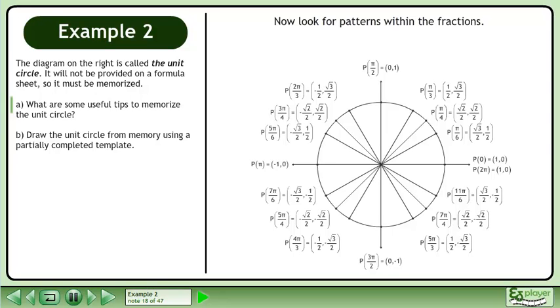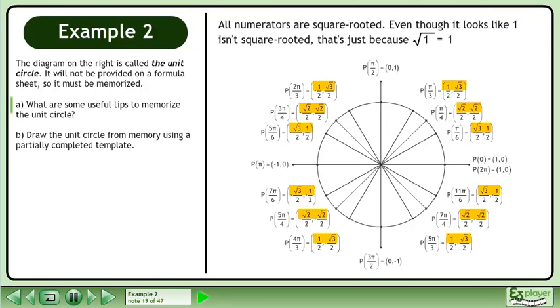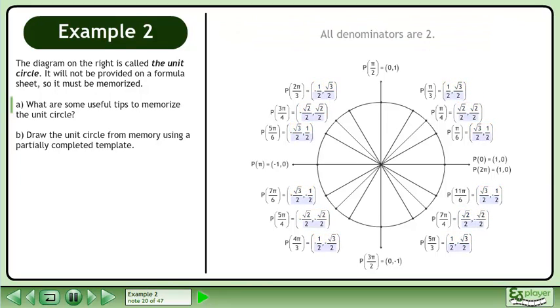Now look for patterns within the fractions. All numerators are square rooted. Even though it looks like 1 isn't square rooted, that's just because the square root of 1 equals 1. All denominators are 2.